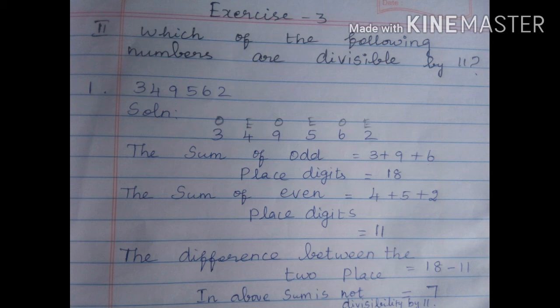Sum of odd place digits: 3 plus 9 plus 6. 9 plus 6 is 15, 15 plus 3 is 18. Sum of even place digits: 4 plus 5 plus 2. 5 plus 4 is 9, 9 plus 2 is 11. Difference: 18 minus 11 equals 7. So the above number is not divisible by 11.